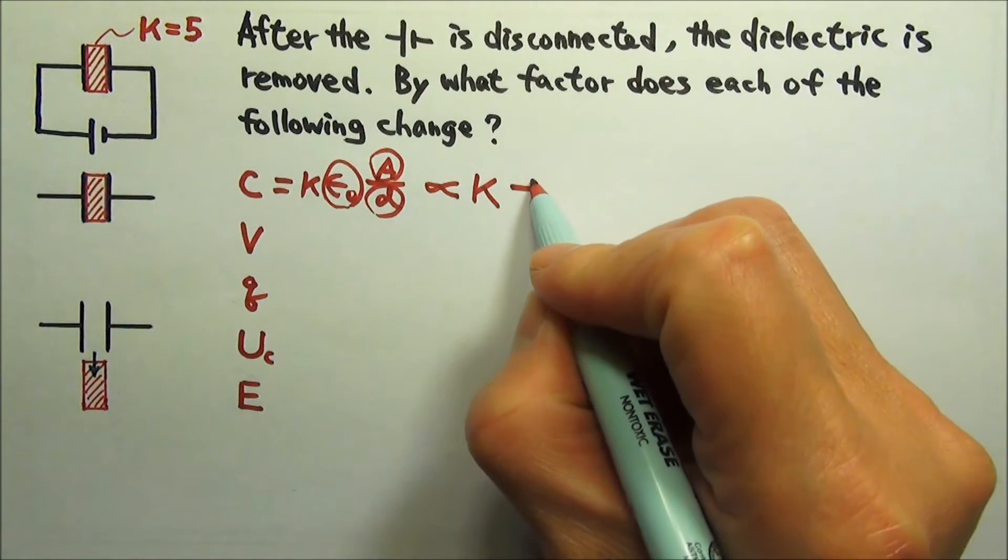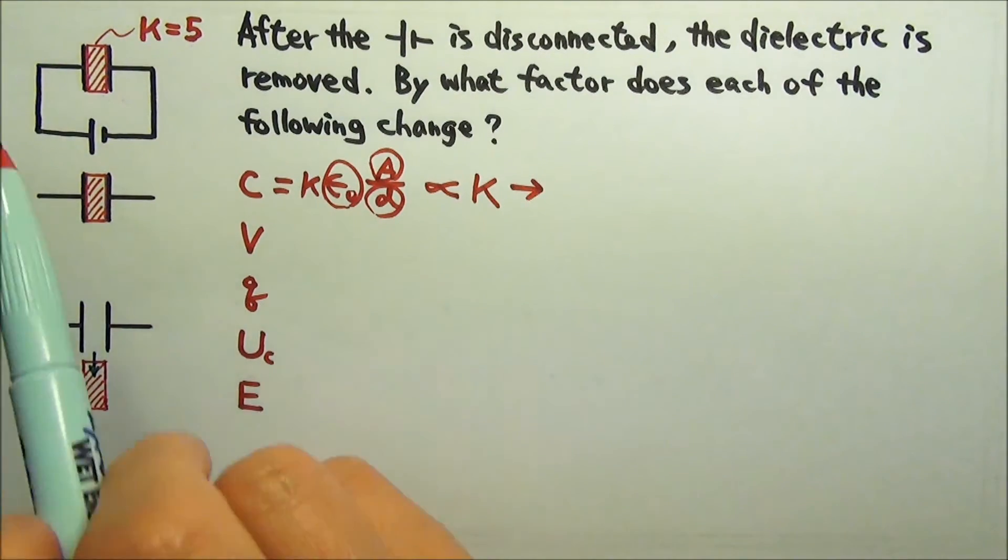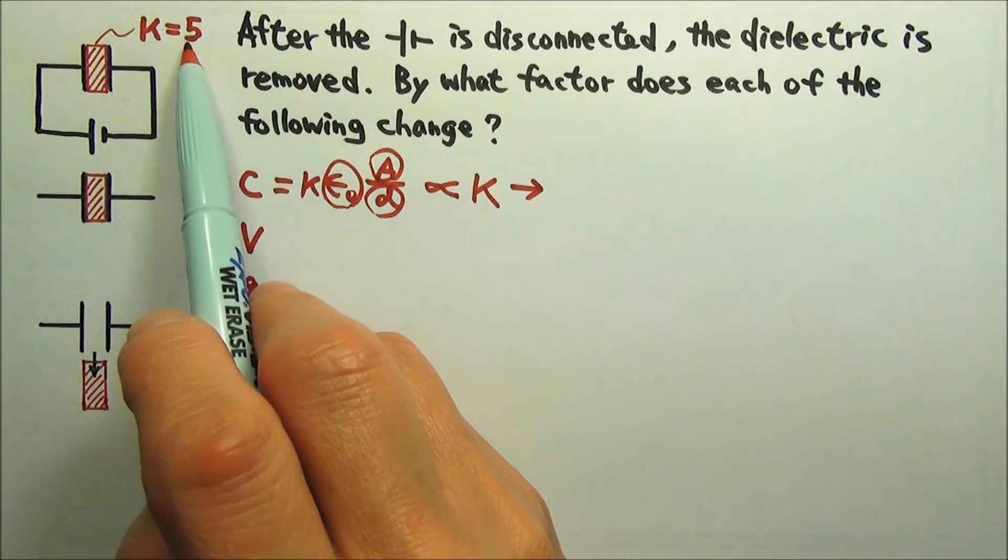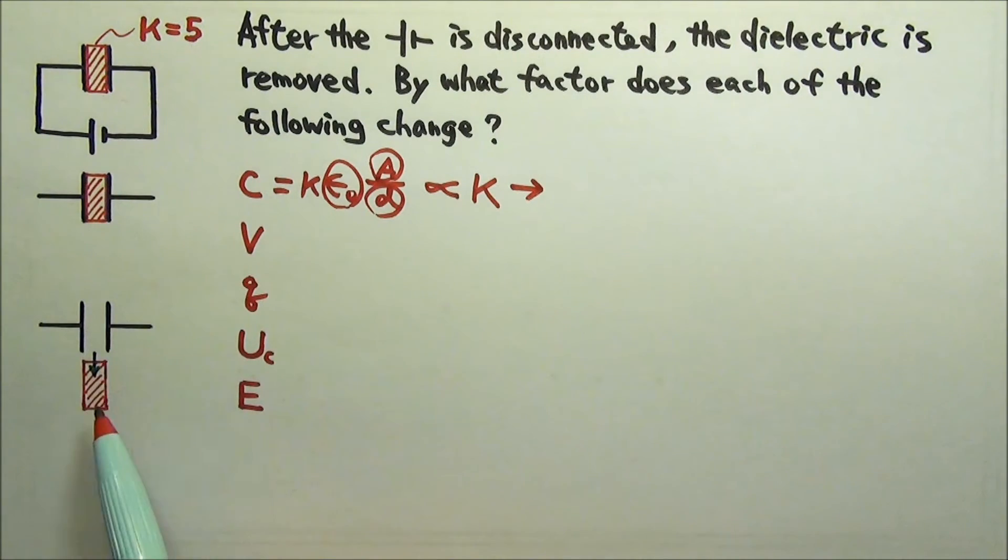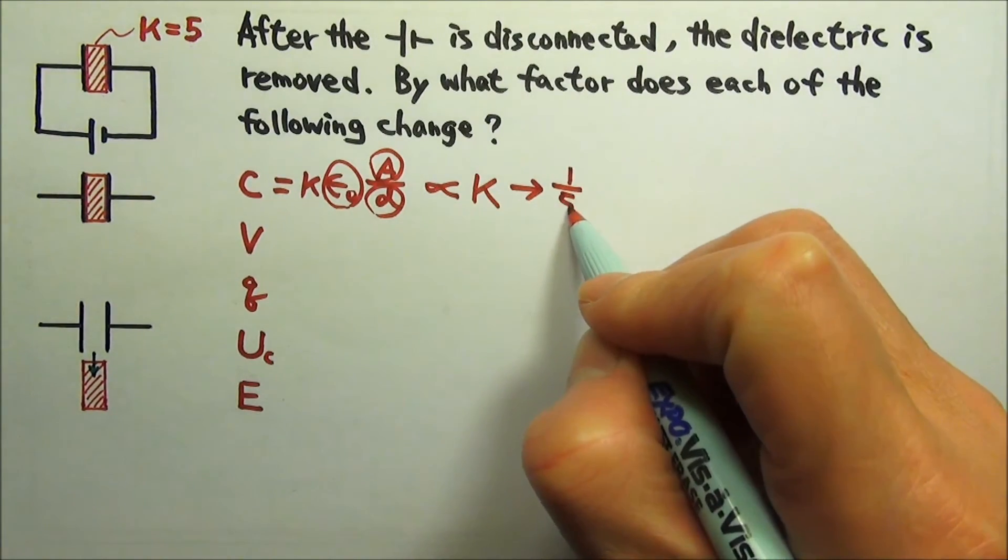By what factor does kappa change? With the dielectric inside, kappa is 5. Without it, kappa is 1. So kappa changes by a factor of 1/5.